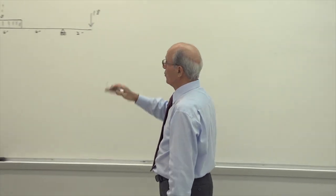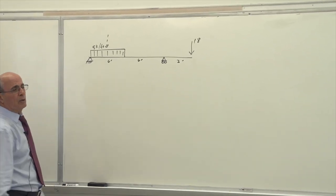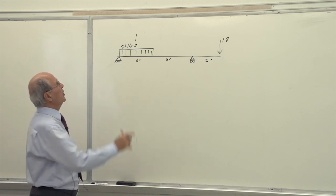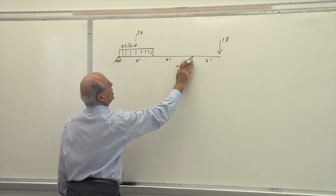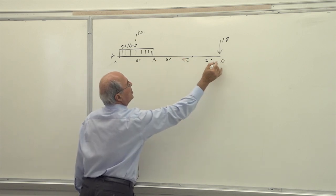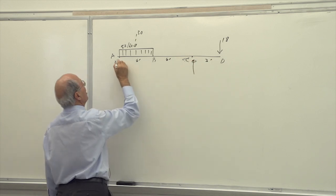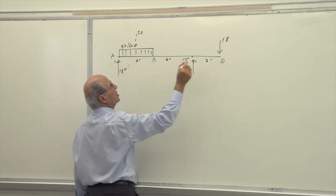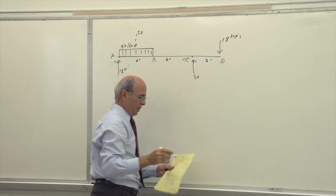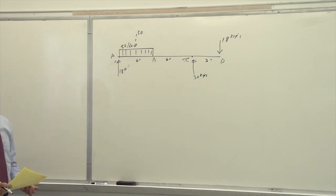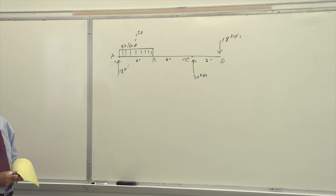Then put the 30 kips there and find the reactions by taking moment about point A or point B. This reaction ends up to be 18 kips, and that reaction ends up to be 30 kips. How can you go through a system like that and not calculate the reactions at A and B? At least 10 people did that — I have to make that complaint one more time.